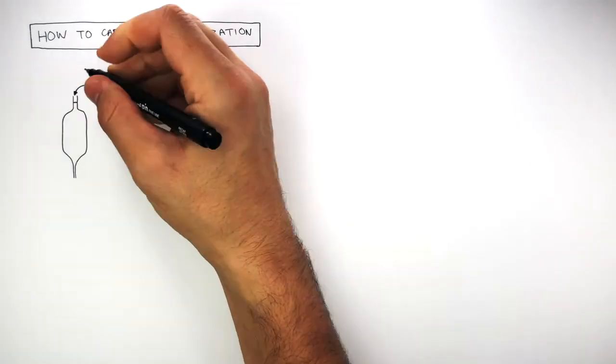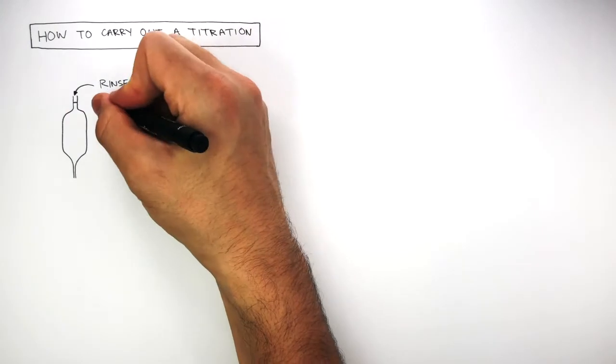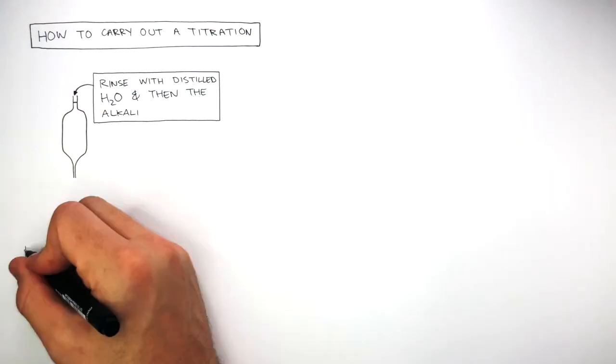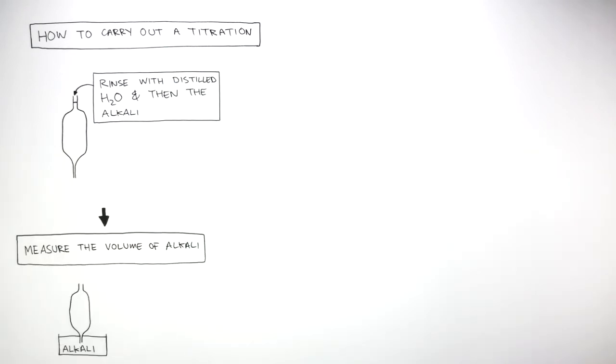We're now going to focus on how to carry out a titration in detail. To begin with, the volumetric pipette is rinsed with distilled water and then the alkali. The next stage is to measure the volume of alkali using a volumetric pipette and a pipette filler.